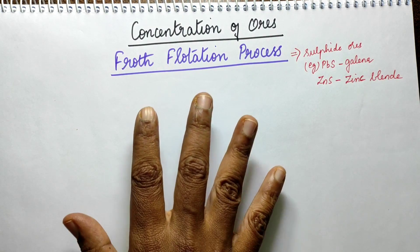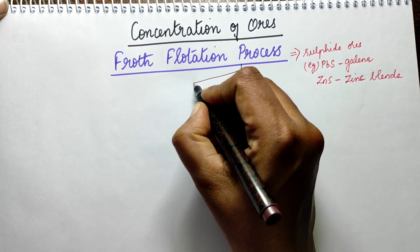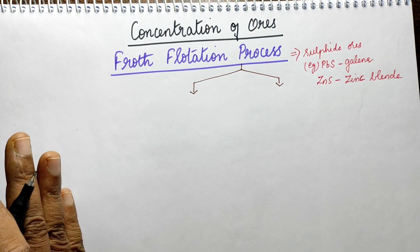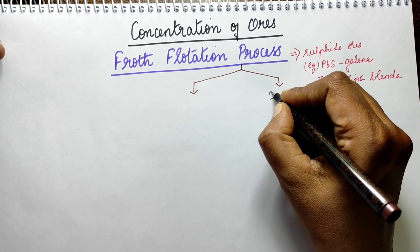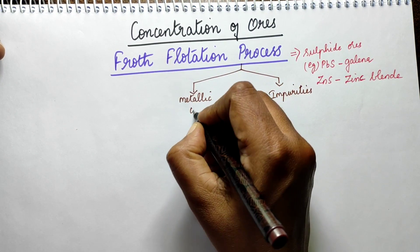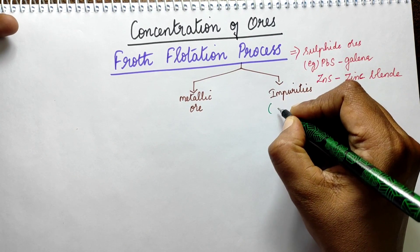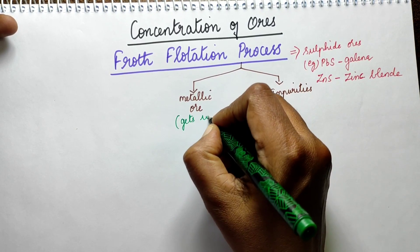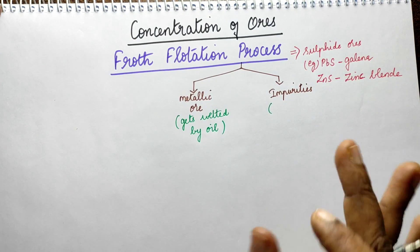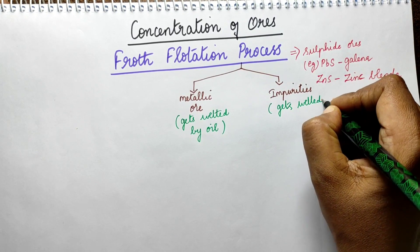Now on what basis does this process function? In the ores there are two parts which we separate. One part is the ore concentrate — the metallic part of the ore — it gets wetted by oil. The impurities don't get wetted by oil but get wetted by water.